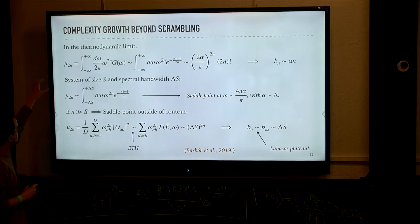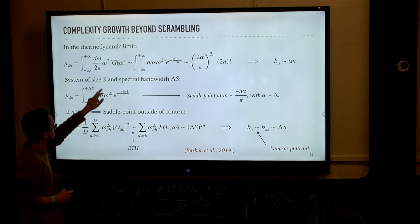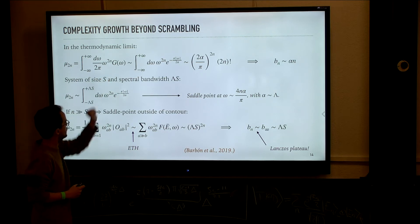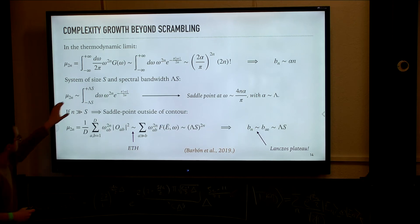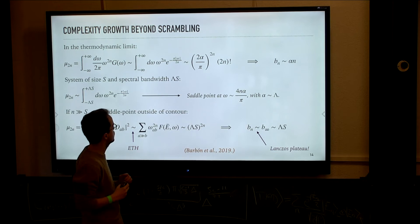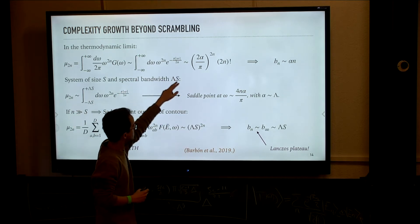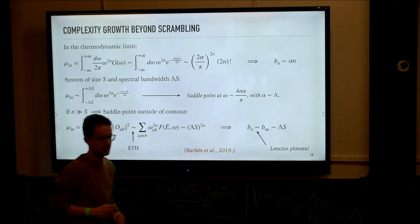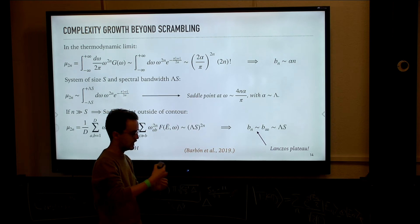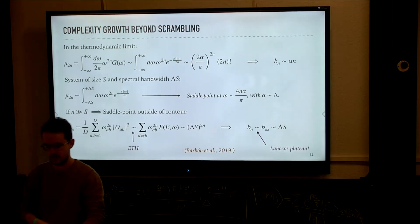In the thermodynamic limit, we computed the moments of the two-point function by doing an integral with the Fourier transform of the two-point function. The important thing is that if we take the maximal limiting form of G(ω) — an exponential profile — and compute the moments of the two-point function, we get an asymptotic form which is factorial in n, that is n to the power n. Plugging this into the machinery that gives Lanczos coefficients for moments, this implies a linearly growing sequence of Lanczos coefficients.